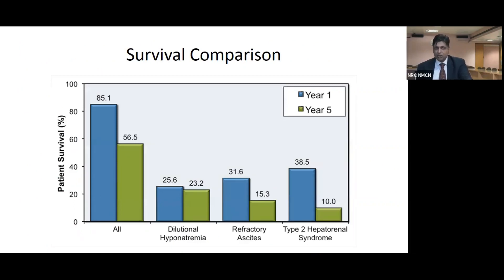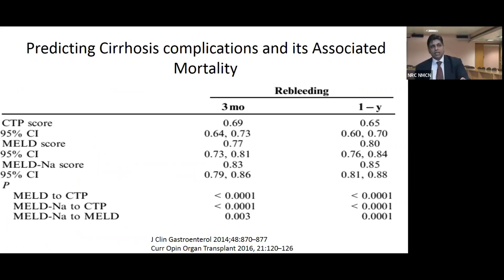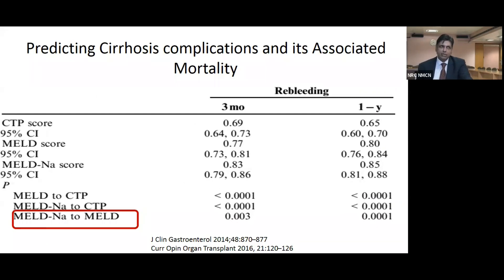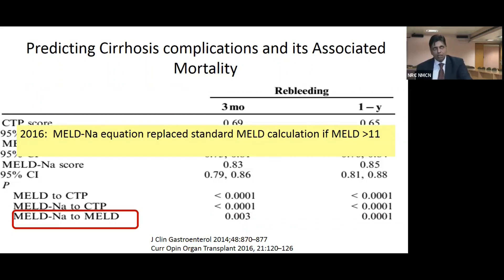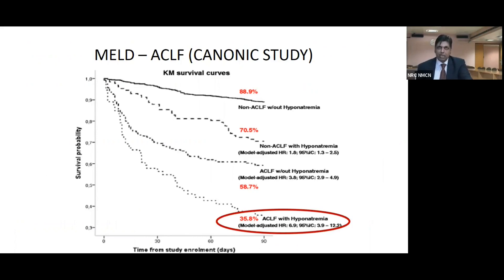Survival in dilutional hyponatremia is almost comparable to refractory ascites and hepatorenal syndrome. More severe hyponatremia correlates with worse survival. The impact of sodium is so significant that the MELD-sodium equation was formed, and MELD-sodium was found to be significantly superior to MELD. Therefore, in 2016 the MELD-sodium equation replaced the standard MELD calculation for MELD greater than 11. The CLIF CANONIC study showed that the ACLF subgroup with hyponatremia had the worst outcome compared to ACLF without hyponatremia.